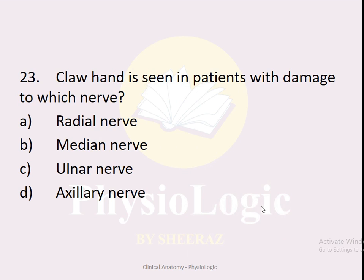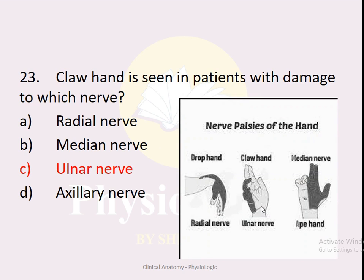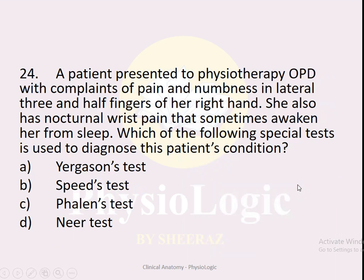MCQ number twenty-three: Claw hand is seen in patients with damage to which nerve? Options: A — radial nerve, B — median nerve, C — ulnar nerve, D — axillary nerve. The correct option is C — ulnar nerve. Remember: wrist drop is caused by radial nerve damage, claw hand by ulnar nerve damage, and ape hand by median nerve damage.